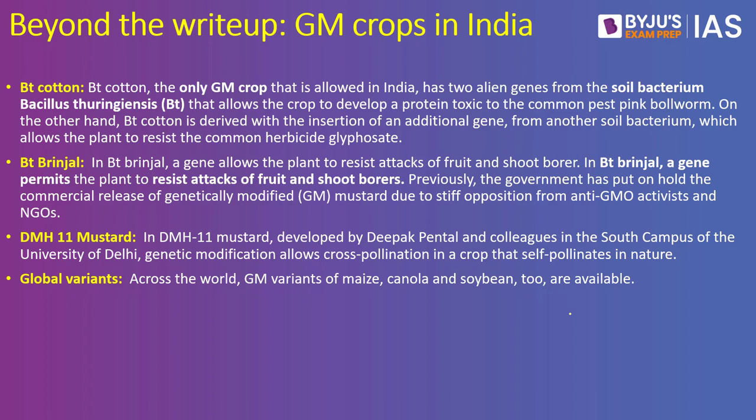India is generally not a risk-taking country when it comes to allowing new technology — we prefer to see how other nations accept it first. The same approach was seen with the COVID-19 vaccine for children. GM cotton in India contains two alien genes from the soil bacterium Bacillus thuringiensis (Bt), ensuring the crop is free of pests. There is also BT brinjal, which was initially allowed and then put on hold due to protests by activists who argued it was against nature, harmful to farmers who could not afford the seeds, and potentially had long-term problems.